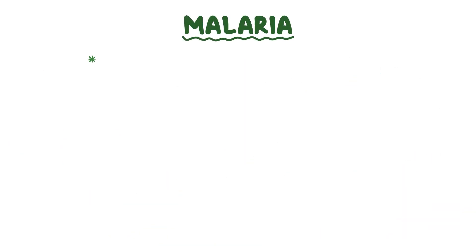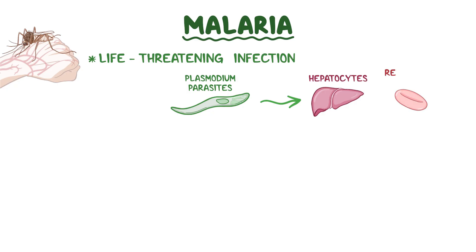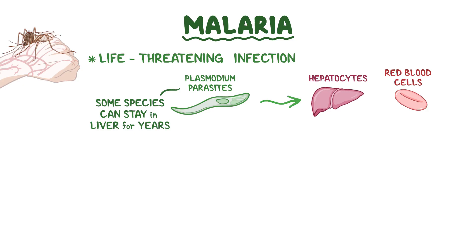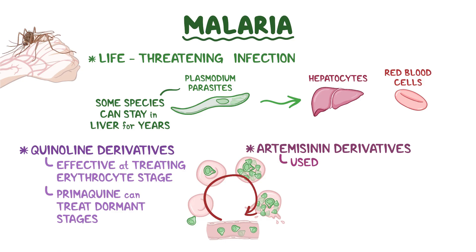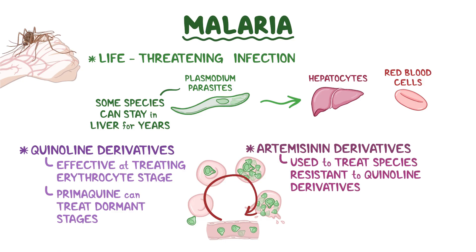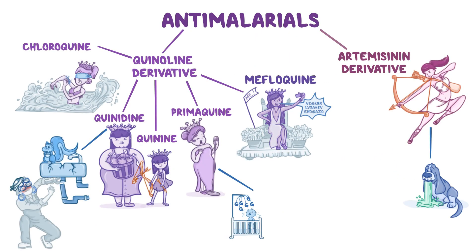As a quick recap: malaria is a life-threatening mosquito-transmitted infection caused by plasmodium parasites. These parasites feed and grow inside hepatocytes and red blood cells, but some species may have dormant forms that can stay in the liver for years. Most quinoline derivatives are effective at treating the erythrocyte stage of plasmodium, but primaquine can treat the dormant stages that remain in the liver. The artemisinin derivatives are used to treat plasmodium species resistant to the quinoline derivatives.